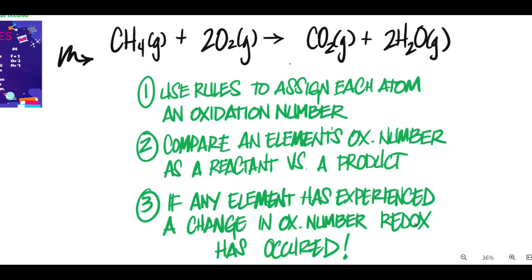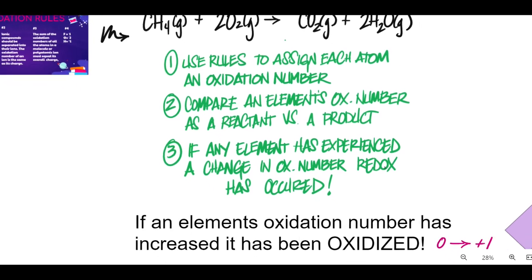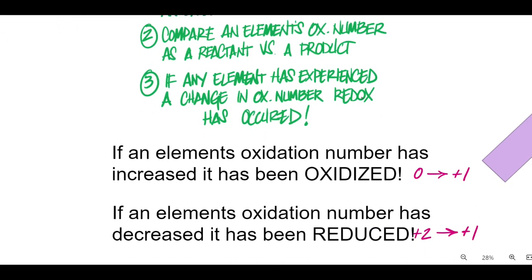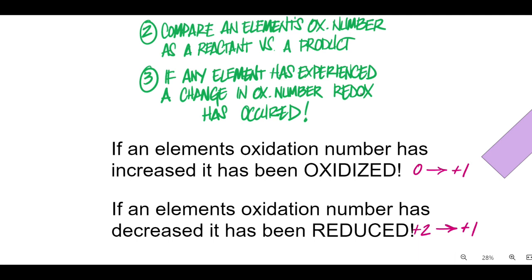For example, let's take a look at this combustion reaction. If I was asked whether or not it was redox, here's what I would do. I would use the rules to assign each atom an oxidation number. Then I would compare each atom's oxidation number as a reactant versus its oxidation number as a product. If any element has experienced a change in oxidation number, this is a redox reaction. Now, more specifically, if an element's oxidation number has increased, we say it's been oxidized. So maybe its oxidation state went from zero as a reactant to plus one as a product. On the other hand, if an element's oxidation number has decreased, we say it's been reduced. So maybe as a reactant it was plus two, and maybe as a product it was plus one.